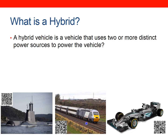Diesel-electric trains tend to have a diesel generator that generates electricity, which then powers an electric motor and drives the train up and down the tracks. And of course vehicles such as Lewis Hamilton's Mercedes — the current F1 rules enforce hybrid engines, with energy recovery systems and regenerative braking that recovers energy from the vehicle as it brakes, which can then be fed back into the wheels as it accelerates out of corners.